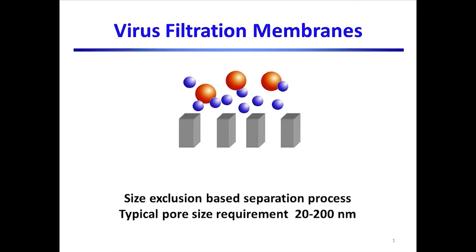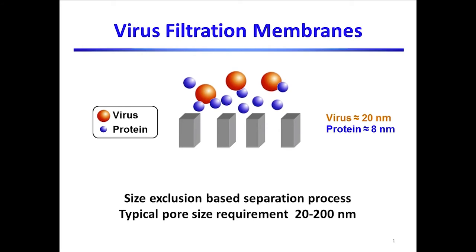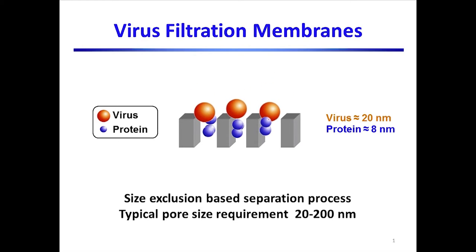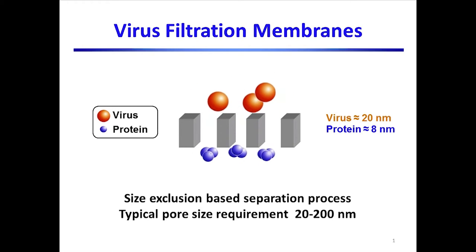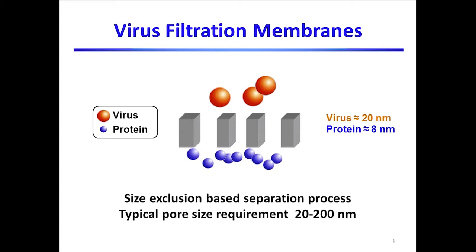Virus filtration membranes can provide a robust size-based mechanism for virus removal. It is a highly size-selective process which allows transmission of therapeutic products such as proteins while retaining virus particles. Most virus filters used today have a pore size around 20 nm, providing high removal of even the smallest viruses.